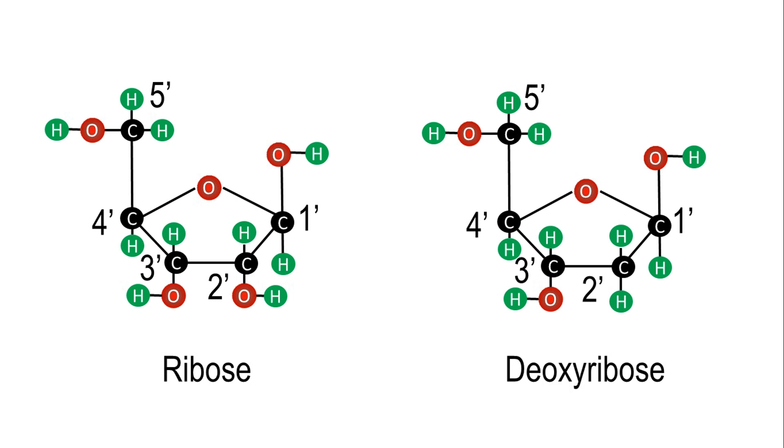Nucleotides with ribose are named ribonucleotides, while the ones containing deoxyribose are named deoxyribonucleotides.